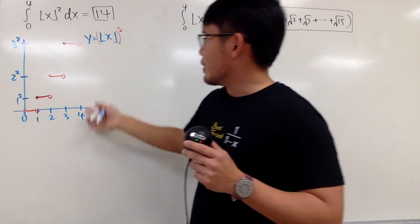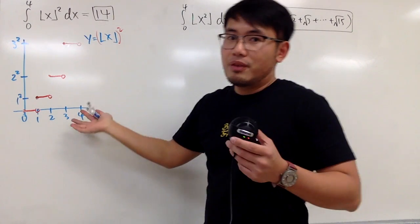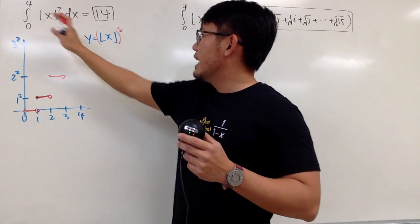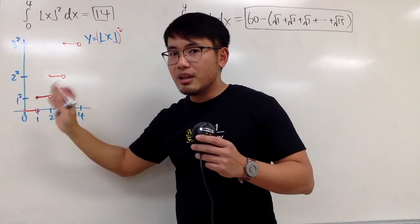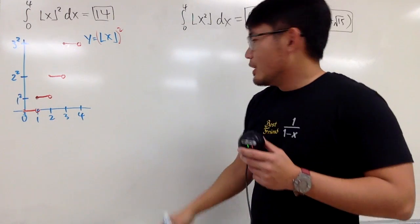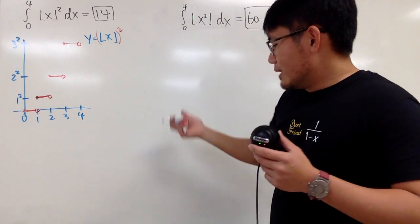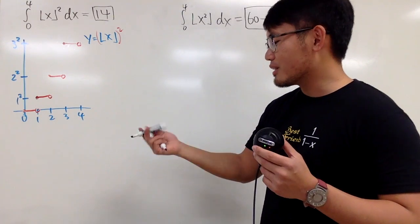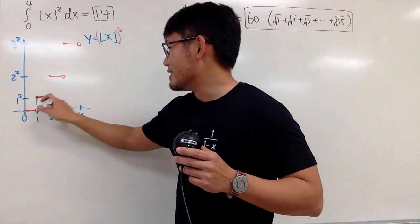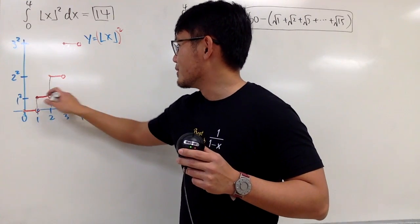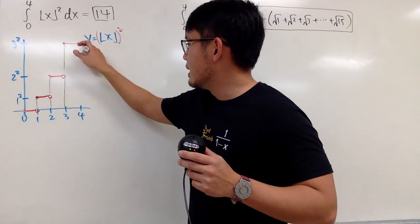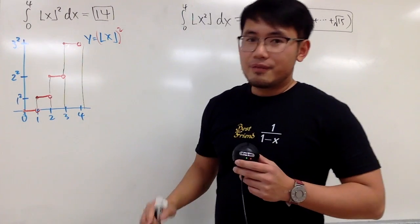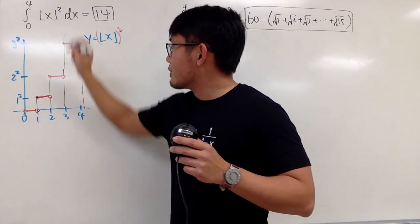And this is the end. Even though when x is 4 you end up with 16, this is the end of the integration interval. Once we have this graph, we just look at the area under the curve. So you just focus on these rectangles.